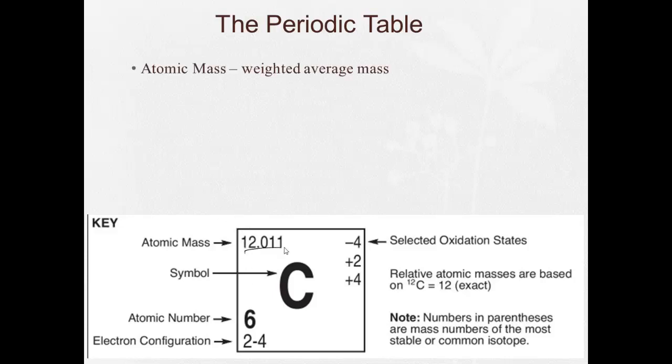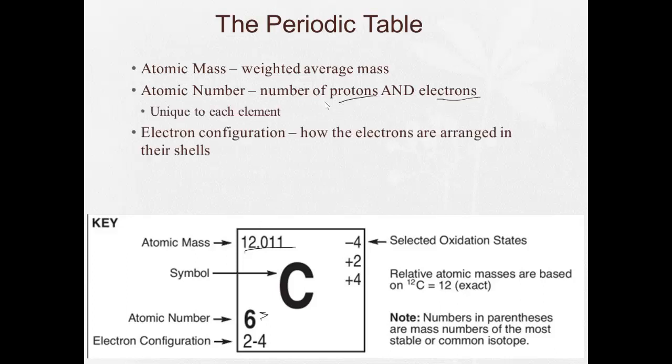So the atomic mass, it's the weighted average atomic mass. We have the atomic number, which gives the number of protons and electrons. And don't forget, that's unique to each element. Each element has its own atomic number.